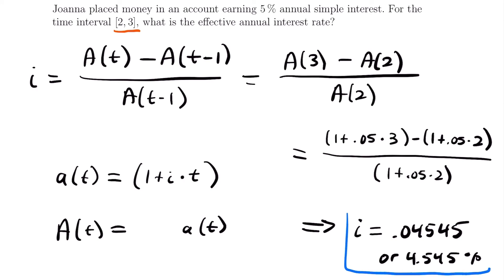That is the annual effective interest rate for this scenario with a 5% annual simple interest rate from year two to year three. This is an unusual problem, but not out of the realm of possibility. The key giveaway that you'll use this formula is when you get a time interval spanning exactly one year — here we went from year two to year three, a difference of one year.